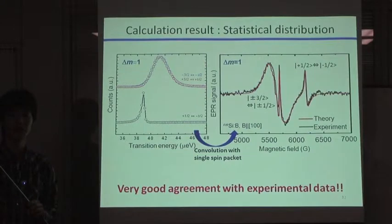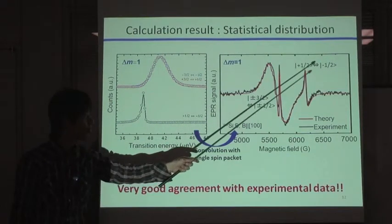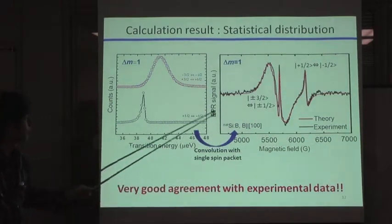This is the calculation result. The left figure is the calculated transition energy distribution of delta M equal to 1 inter-subband transition. And by using this spectrum, we convoluted it with a single spin packet. And we have successfully observed EPR spectrum like this.